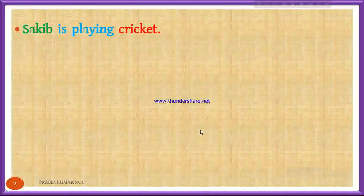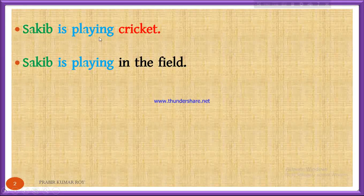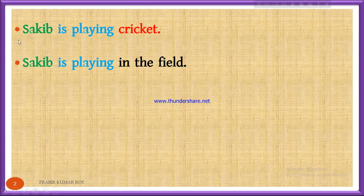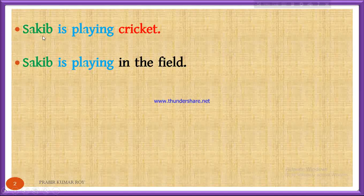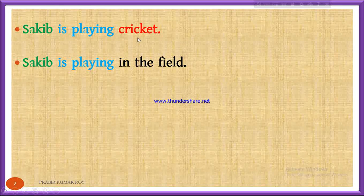Please look at the two sentences here. In the first sentence, Saqib is playing cricket. In this sentence, who is the doer of the action? Saqib. So Saqib is the subject of the sentence. What is the action performed by Saqib? Playing. So playing is the verb. What is Saqib playing? Saqib is playing cricket. So cricket is the object here.